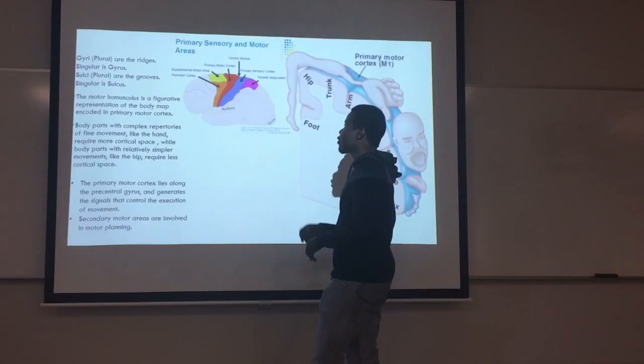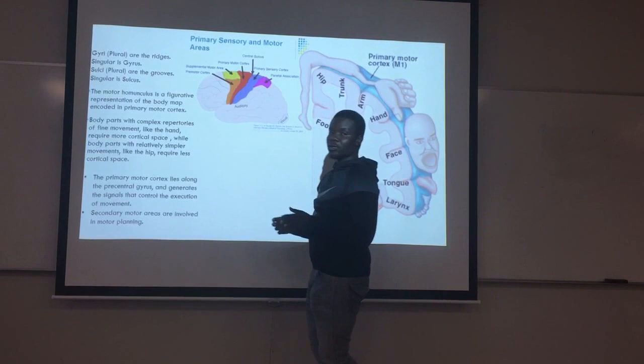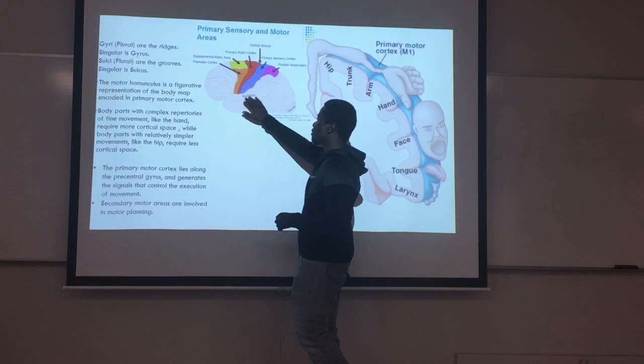Welcome back. To continue on the cerebrum: the cerebrum is composed of ridges which are considered gyri, and the grooves between the ridges are considered sulci, which are the spaces between.